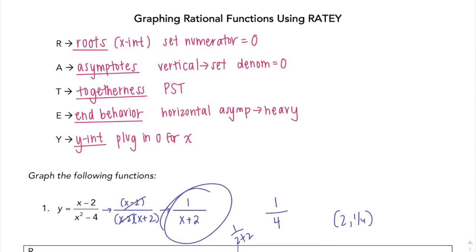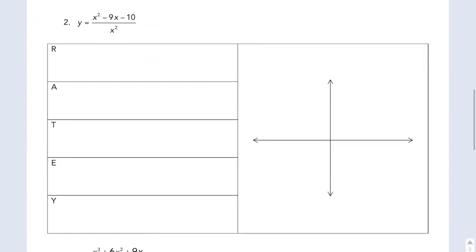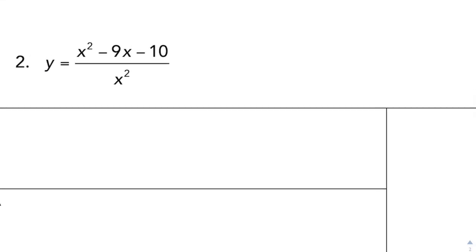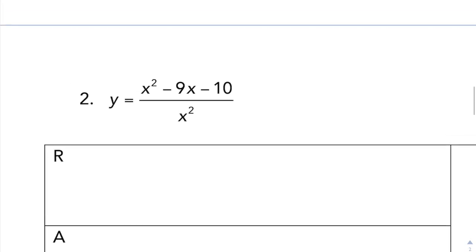So RATEY is just like graphing, but just a different way of graphing by using the R-A-T-E-Y system. So on this one, first thing first, factor it out. So sum to negative 9, product is negative 10. Give you a second to think about it. It's negative 10 and 1. So I'm going to rewrite this as x minus 10 times x plus 1, all over x squared.